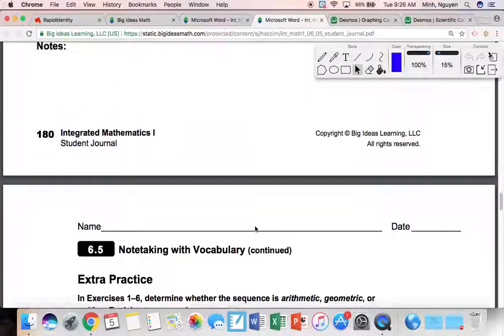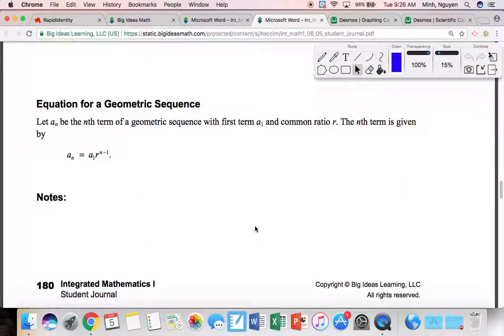What's going to help us a lot is if we have this equation right here. Let a_n be the nth term of a geometric sequence with first term a_1 and common ratio r. The nth term is given by a_n equals a_1 times r to the n minus 1. The nth a equals the first a.